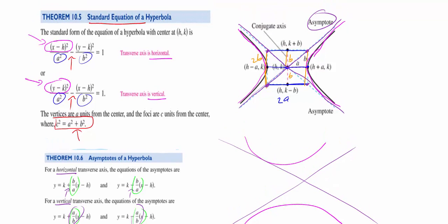Keep in mind that the a, b, and c values are very similar to those of the ellipse. The key differences are: when calculating c, use c² = a² + b²; and in the standard form of the equation, it's (x − h)² / a² minus (y − k)² / b² = 1 for horizontal. For a vertical axis, the y term comes first: (y − k)² / a² minus (x − h)² / b² = 1.